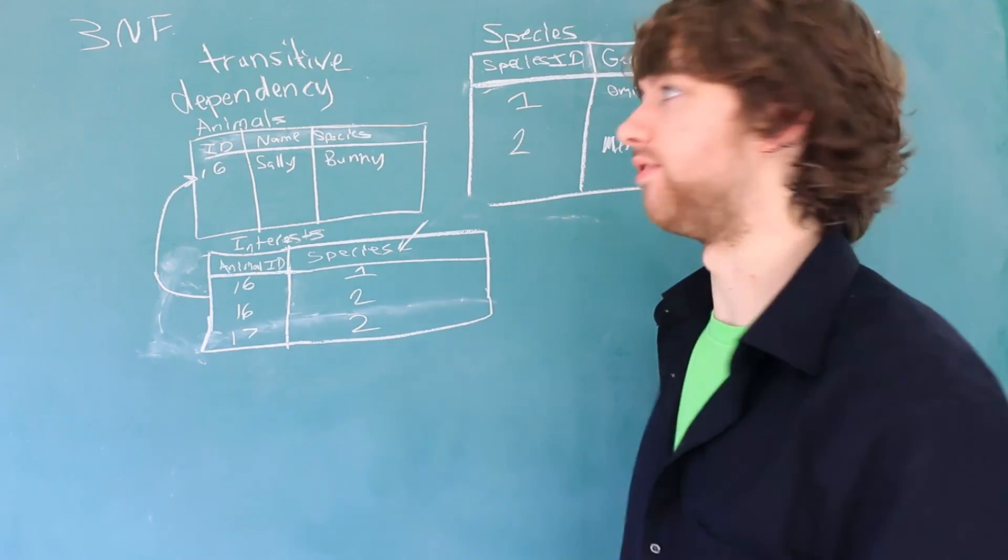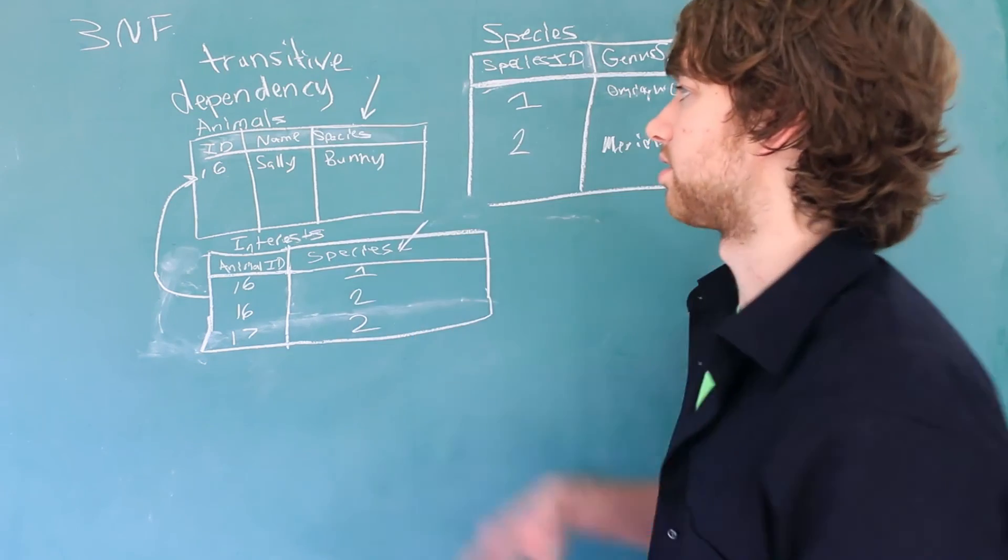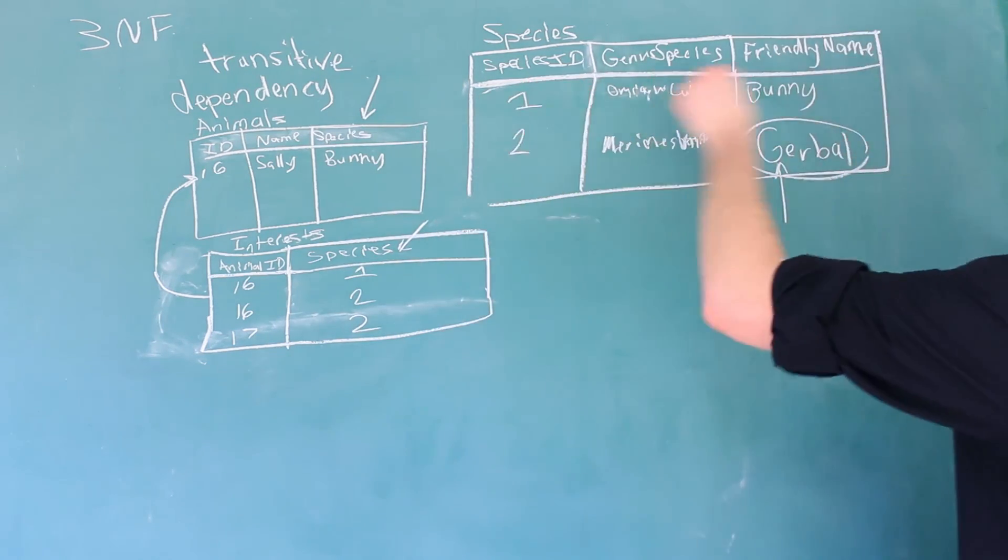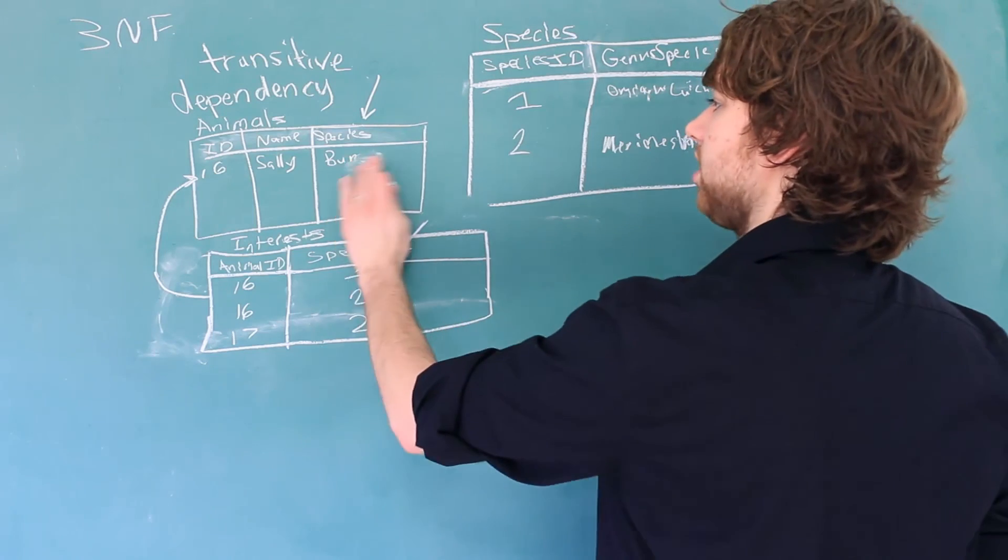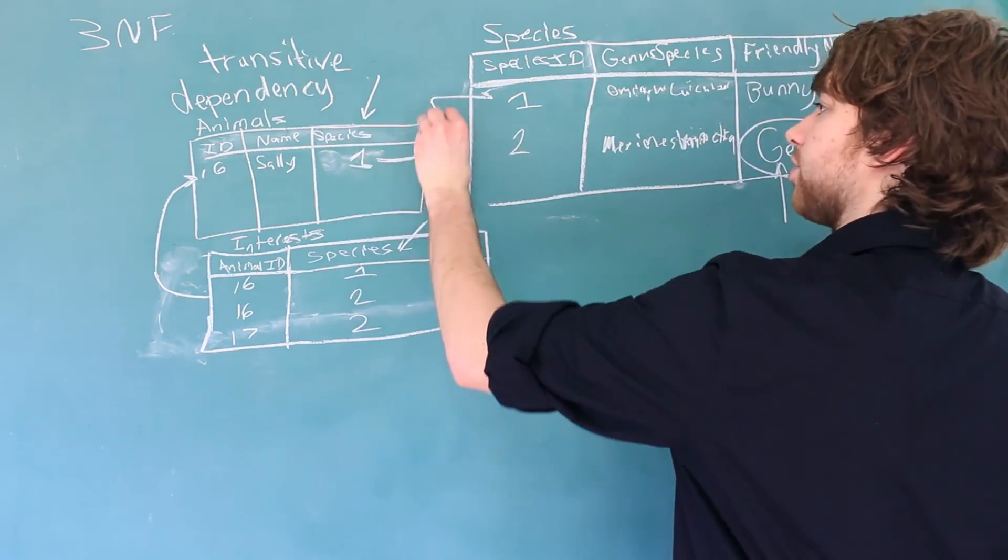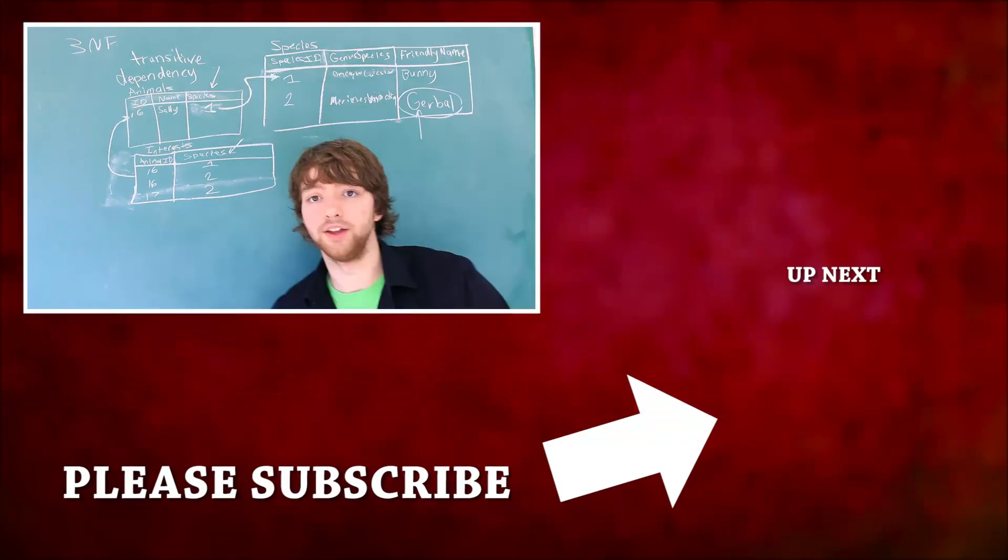In addition to fixing this problem, we have the added benefit of improving this table. That's because this species column can be replaced with a reference to one of these rows. So this is a bunny, so we could replace species with one. And now this just points to this row right here.